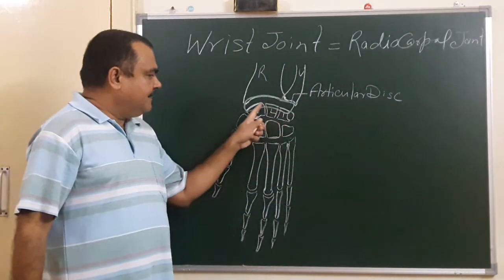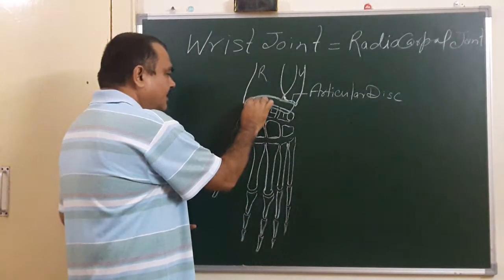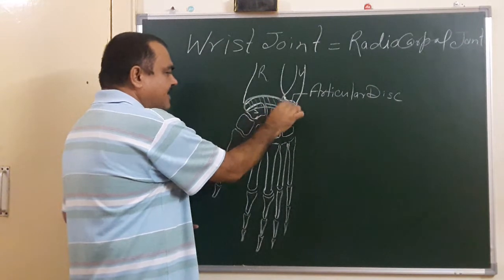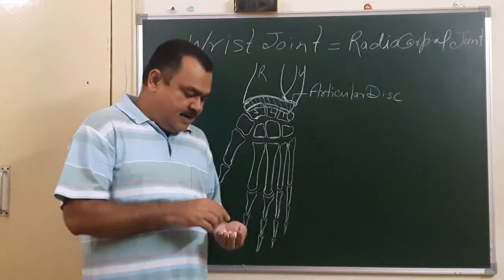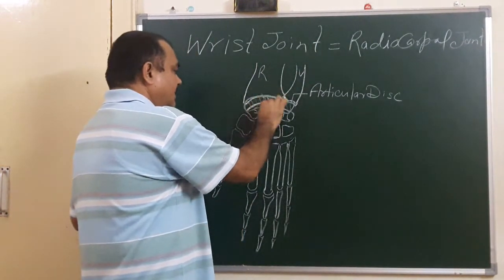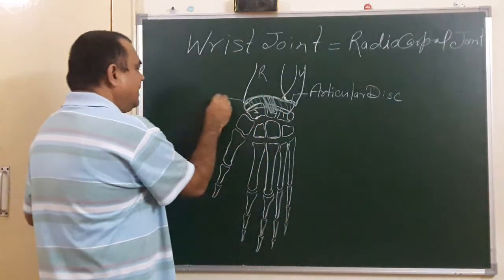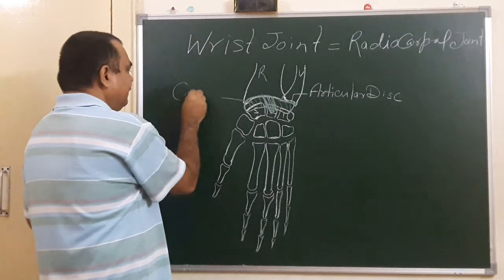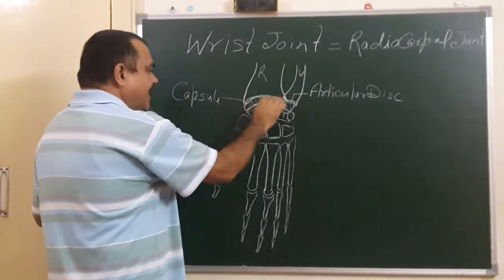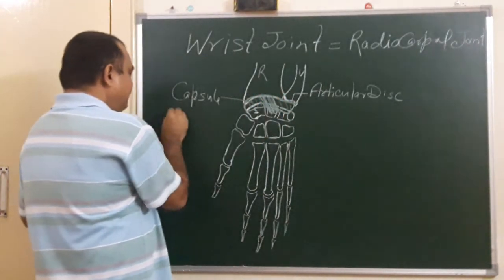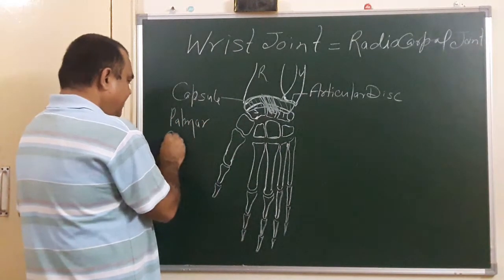This is the joint cavity. This is the capsule of the joint — this is a fibrous capsule. This fibrous capsule is reinforced anteriorly by the palmar radiocarpal ligament.